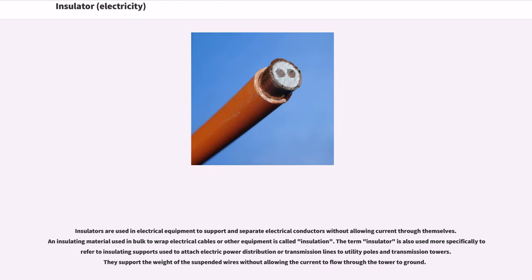Insulators are used in electrical equipment to support and separate electrical conductors without allowing current through themselves. An insulating material used in bulk to wrap electrical cables or other equipment is called insulation. The term insulator is also used more specifically to refer to insulating supports used to attach electric power distribution or transmission lines to utility poles and transmission towers.